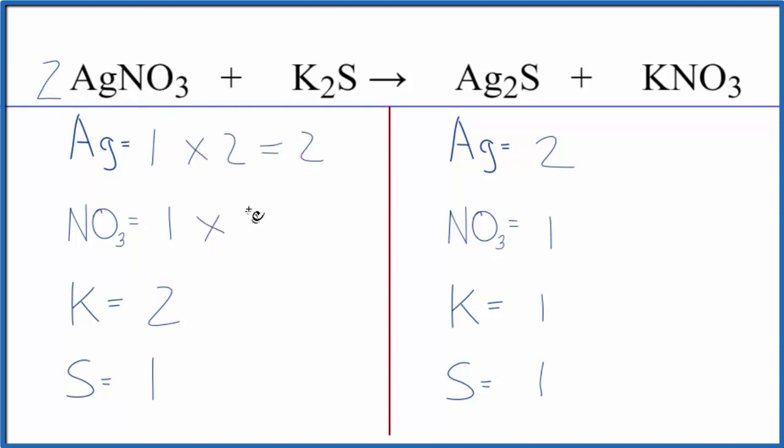Now I have one times two, two nitrates. But I could put a two here in front of the KNO3, two times the one potassium. So I have one nitrate times two. That'll balance the nitrates. One potassium times two. That'll give me two of those. And we're done.